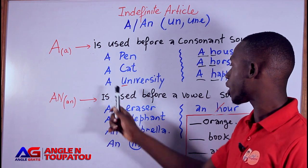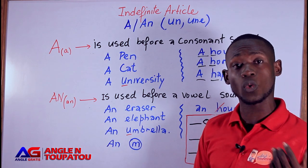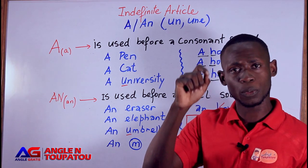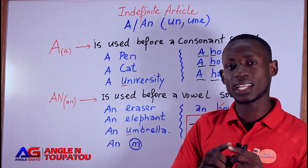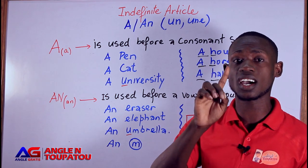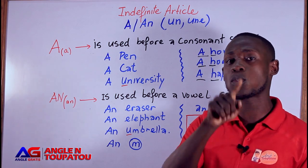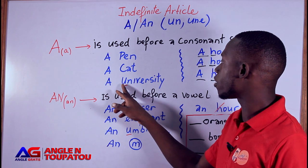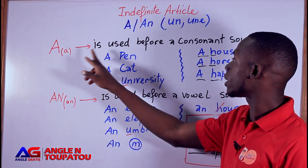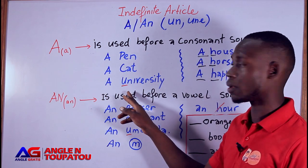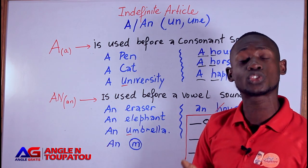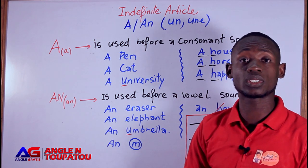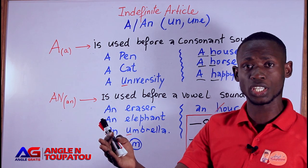Now here are two important points. Let's talk about 'university'. For 'university', the letter U gives a consonant sound — 'yoo' — even though it looks like a vowel. So I say 'a university'. I cannot say 'an university'. I need to say 'a university'. It's 'a university', because 'U' here gives a consonant sound like 'yoo'.